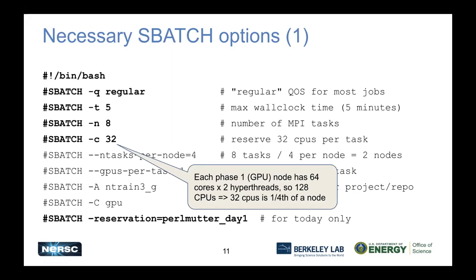There are a bunch of necessary sbatch options for having GPUs - a couple more now than what you were familiar with on Cori. You'll need -q for QoS, and for almost everything you'll want to use the regular QoS. Set a time limit - if you give just a number, that's the time limit in minutes for Slurm. In this example we're saying after five minutes Slurm is allowed to kill this job. For a real job you'll probably want a few hours.